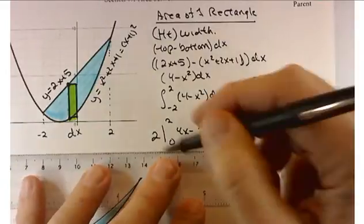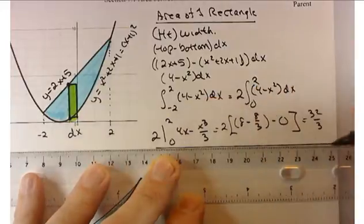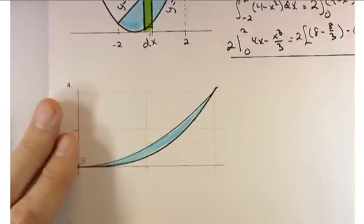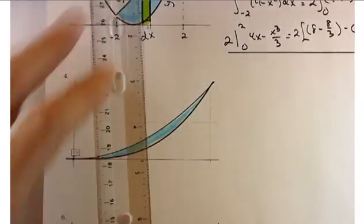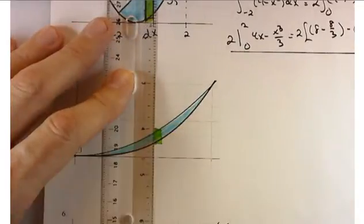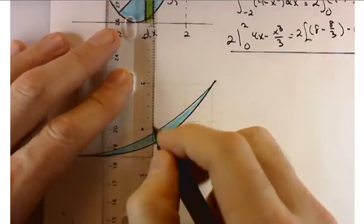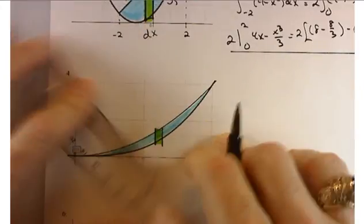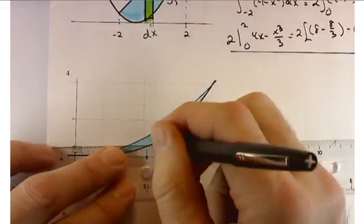Let's try problem number 4. These first few I have drawn for you — at some point we'll have to draw graphs ourselves. We've got two functions: y equals x cubed and y equals x squared. Which one is on top, the x cubed or the x squared function?